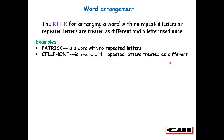When we say repeated letters are treated as different, we are going to treat the letters that are repeating — L and E — as letters that are not repeated. If I count how many letters are in 'cell phone' there are nine of them. So treating repeating letters as different means it's like we have nine different letters. In 'Patrick' we have seven different letters because there is no repeated letter.